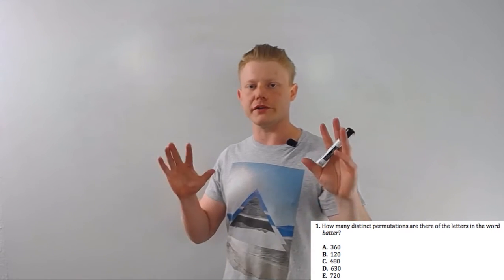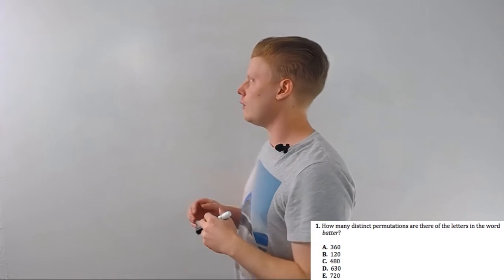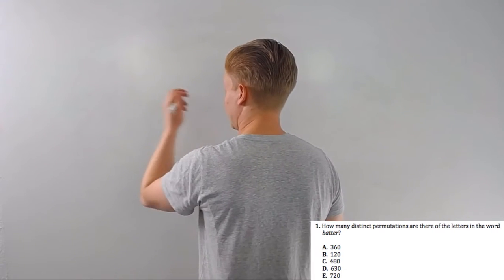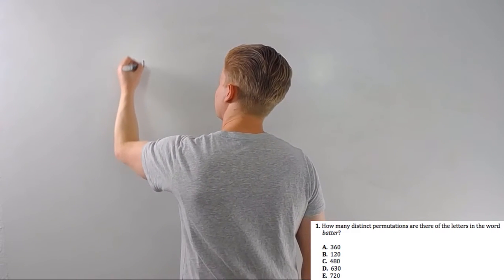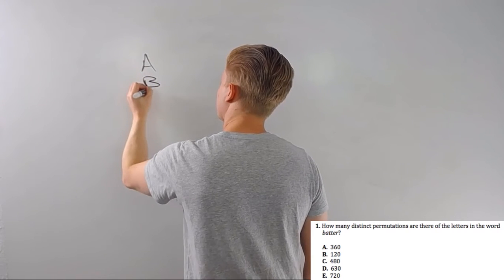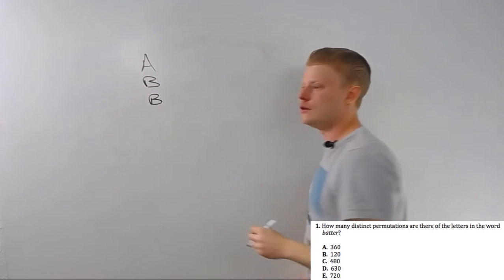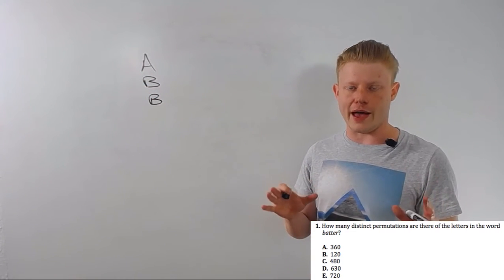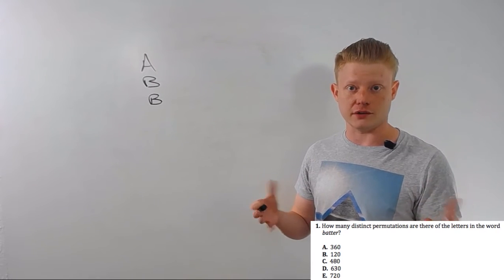Let's talk about distinct permutations. Now, if permutations are the number of ways we can order things, distinct permutations are the number of ways we can order things such that every order we have is different, is distinct, is unique.